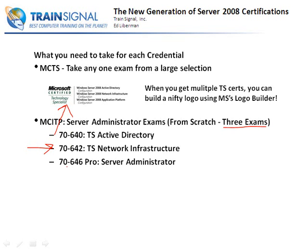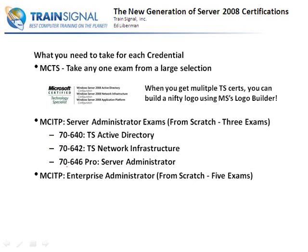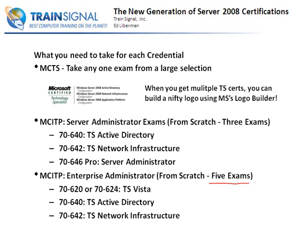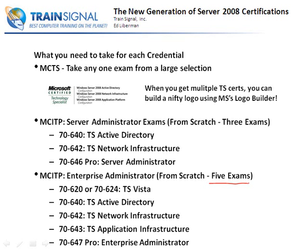The 646 is what finally makes you an MCITP, specifically the Server Administrator. Now, if you want to get MCITP Enterprise Administrator from scratch, it will take five exams. You have to take either 70-620 or 70-624, which are both Vista certification exams. After your Vista client exam, you again have to take 640 and 642, plus 70-643 for an MCTS on application infrastructure, and then 70-647, which makes you an IT Professional Enterprise Administrator.